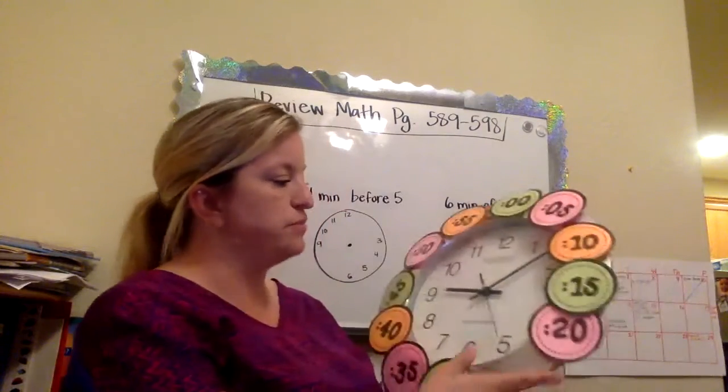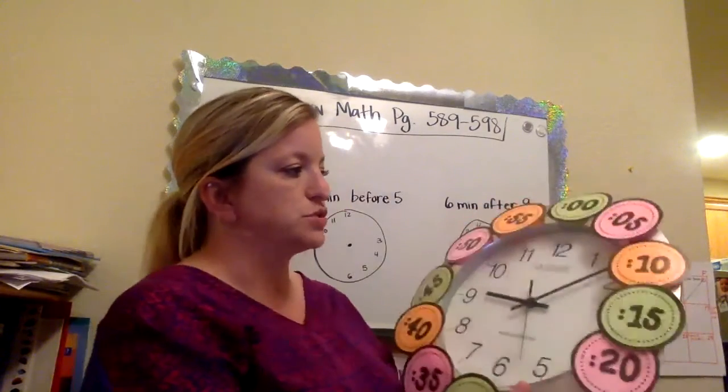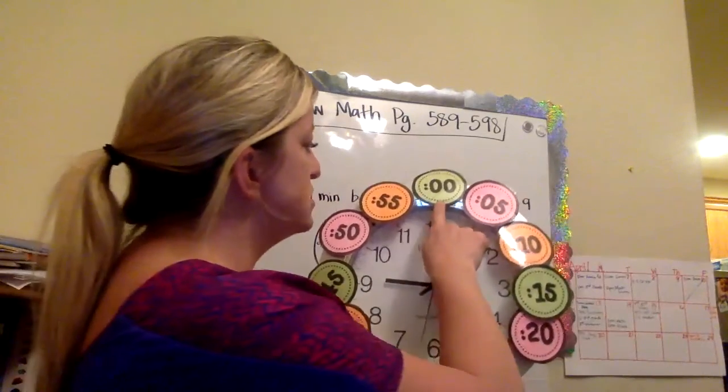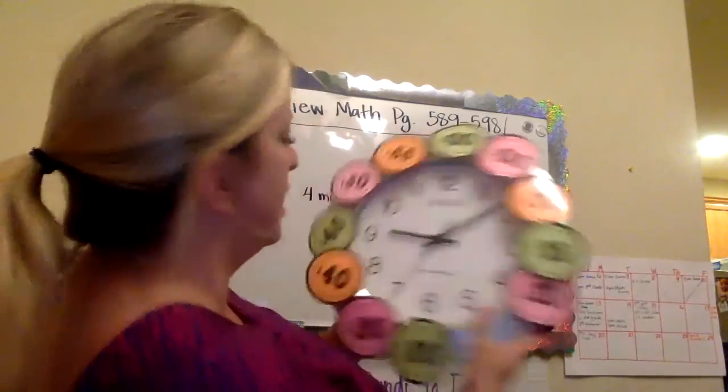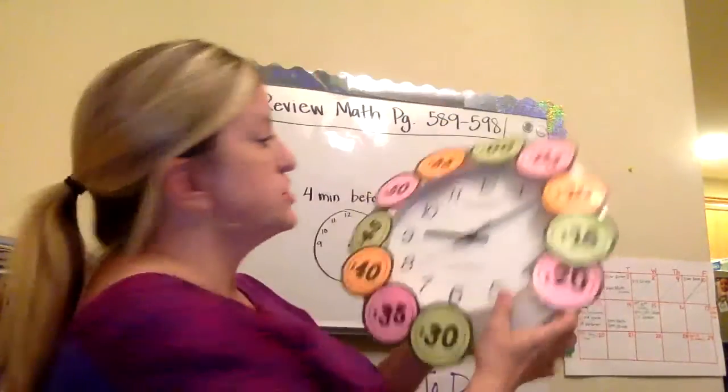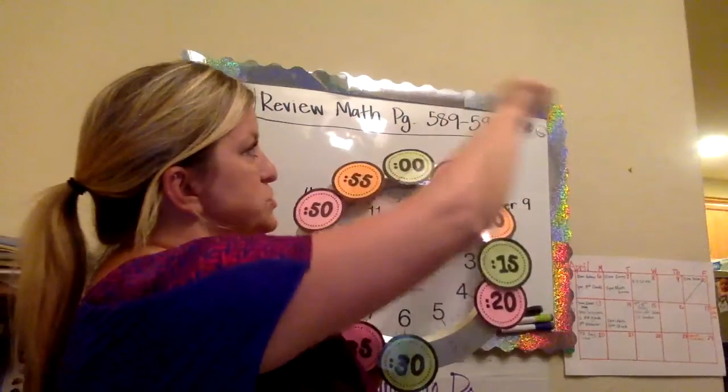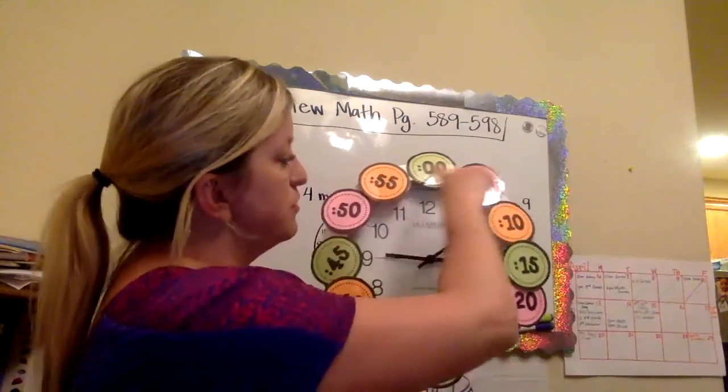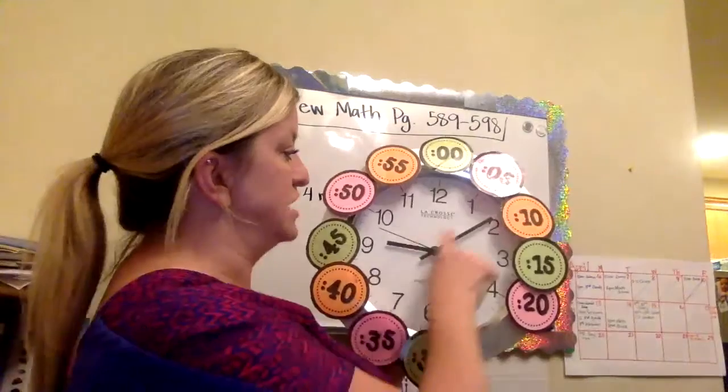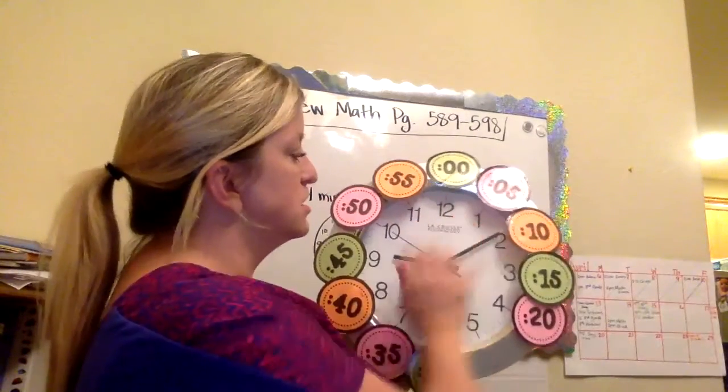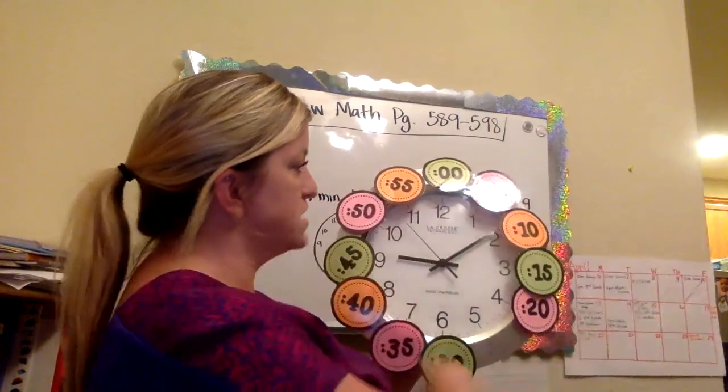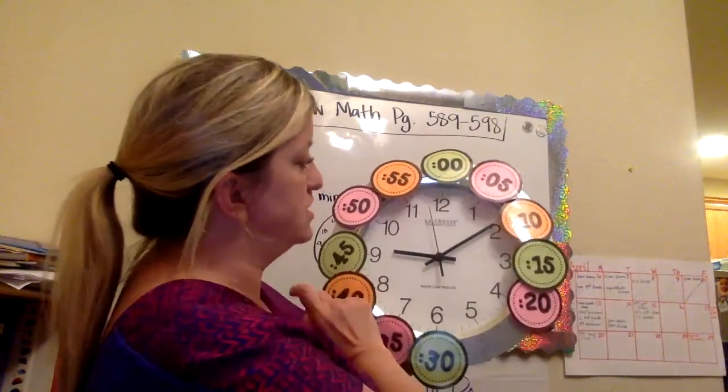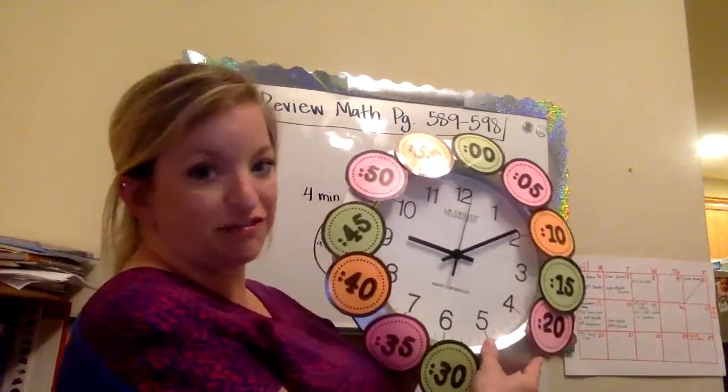When you talk about time, in our book it talks about six minutes after or four minutes before. When you say after, so right now it is eight minutes after nine. When you do after, you're going to go to the right. This direction is called clockwise because this is the direction that the hands move. These are called hands. This is called a face. So you're going to go to the right, and that is called clockwise when you're looking for after. So right now it is eight after nine, and now it is nine after nine.